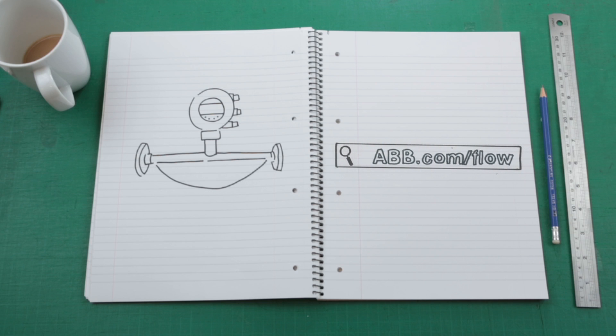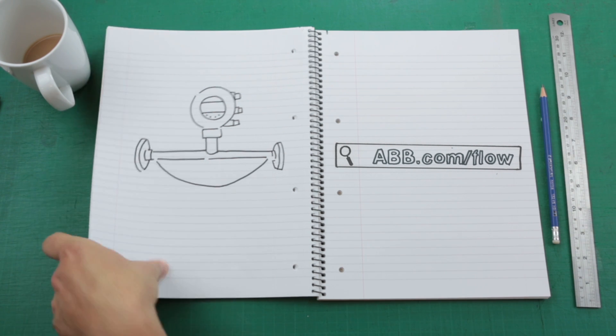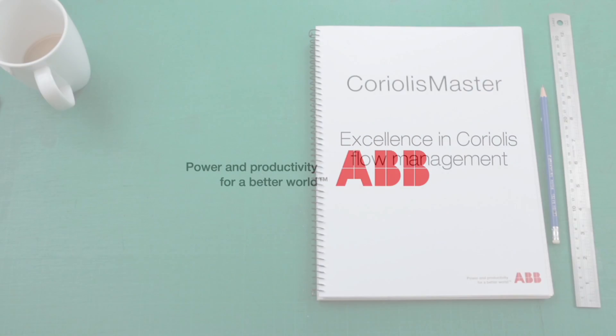To find out more about Coriolis master mass flow meters and what they could do for your process, get in touch today or visit abb.com/flow.